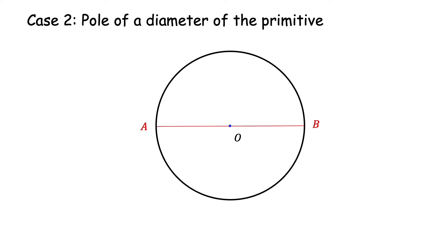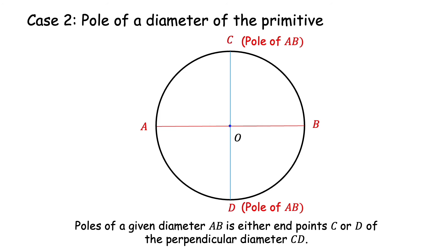The next simple case: let us look at a vertical plane represented by the diameter AB and try to locate the pole of this great circle AB. To do this, we draw the perpendicular diameter CD. Then either of the endpoints of this diameter, C or D, represents the pole of AB. The justification is simple — C lies on the primitive, so it is a horizontal direction, and C is at 90 degrees to A.